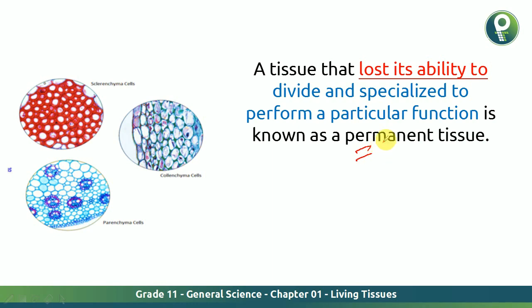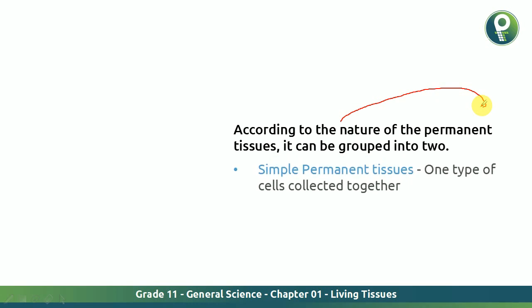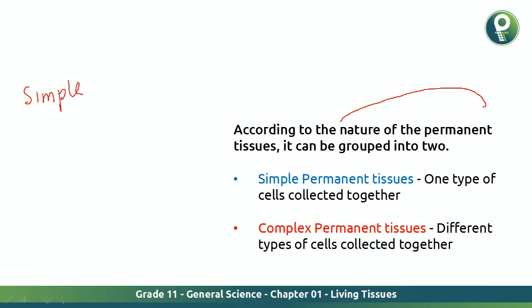We are going to talk about that permanent tissue now. According to the nature of the permanent tissue, it can be grouped into two. They classify that particular tissue based on its nature: the first is simple permanent tissue, and the second is complex permanent tissue.